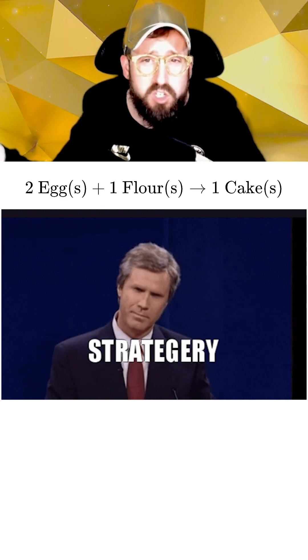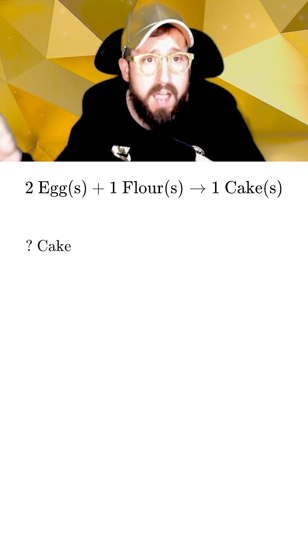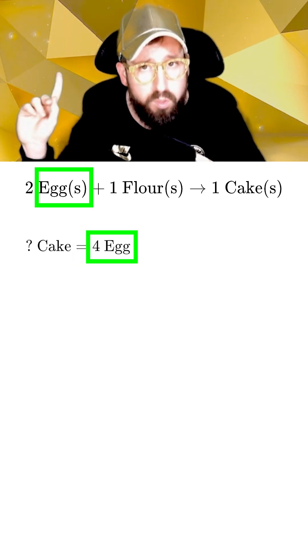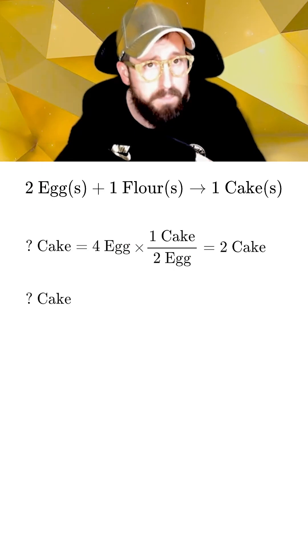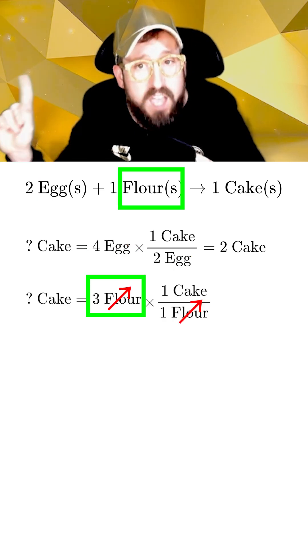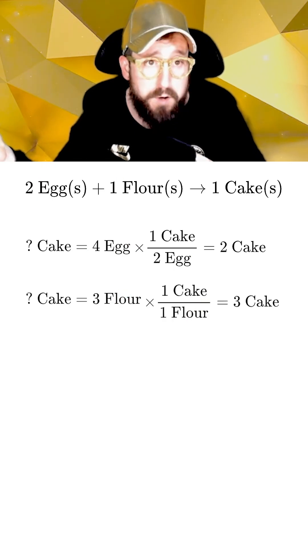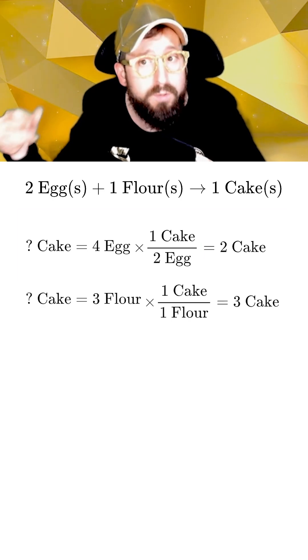For chemistry questions, we can use the same strategy. Here we'll use stoichiometry to see how much of a final product we could make with one of the given starting reactants, and compare it to how much final product we could make with the other starting reactant. Whichever reactant gives us less final product is the reaction that occurs, and is also the limiting reactant.